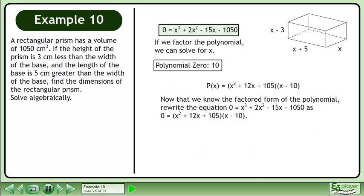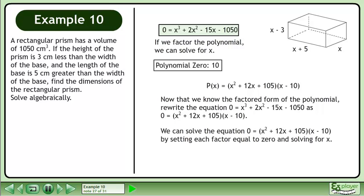Now that we know the factored form of the polynomial, we write the equation 0 equals x³ plus 2x² minus 15x minus 1050 as 0 equals x² plus 12x plus 105 times x-10. We can solve the equation by setting each factor equal to 0 and solving for x.